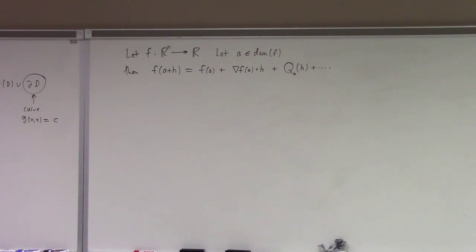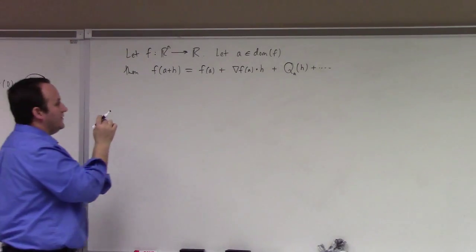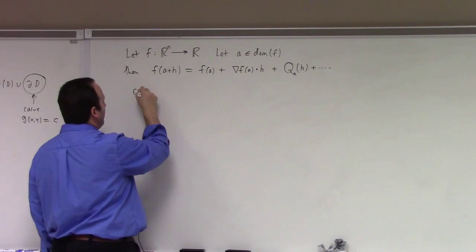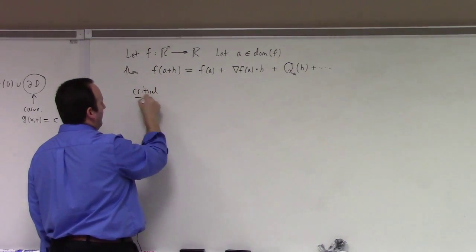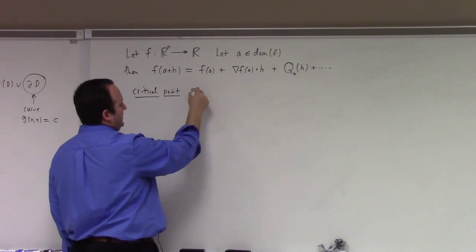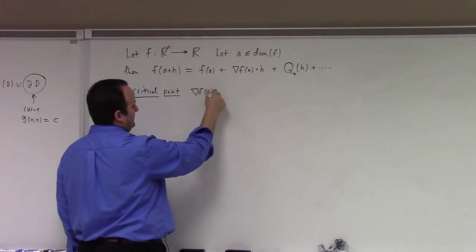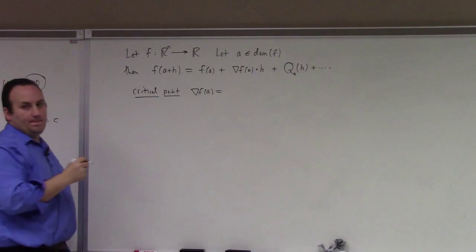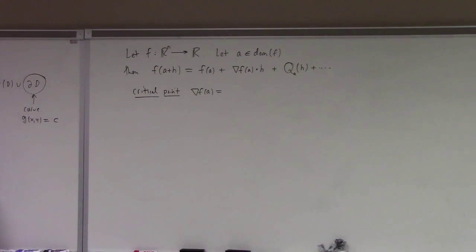So if you have a critical point, that means the gradient of F at A is what? Yeah, it's zero, or it's undefined, but we're going to assume we're working with a smooth function, so it's defined and it's just zero.